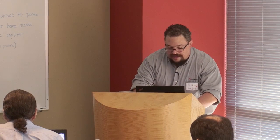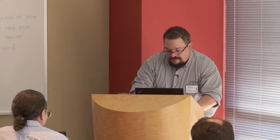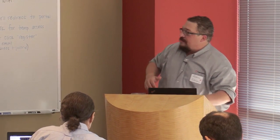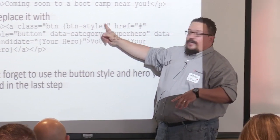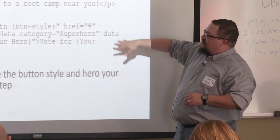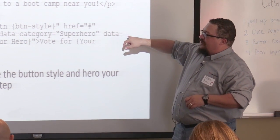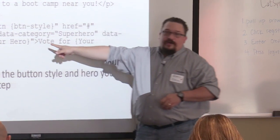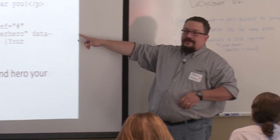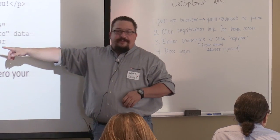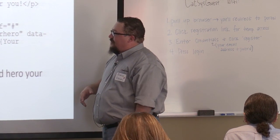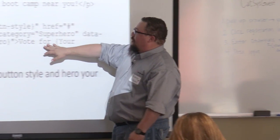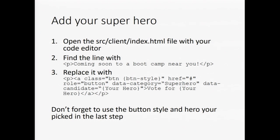When I said button style, the only thing I want you to replace is that little part where it says 'your button style' — make sure you keep the rest of it. Then you're going to fill in the data attribute called data-candidate. I've got in there in curly braces 'your hero' — replace that with your hero. And for the link text it says 'Vote for' and your hero in curly braces — replace that with the name of your hero.